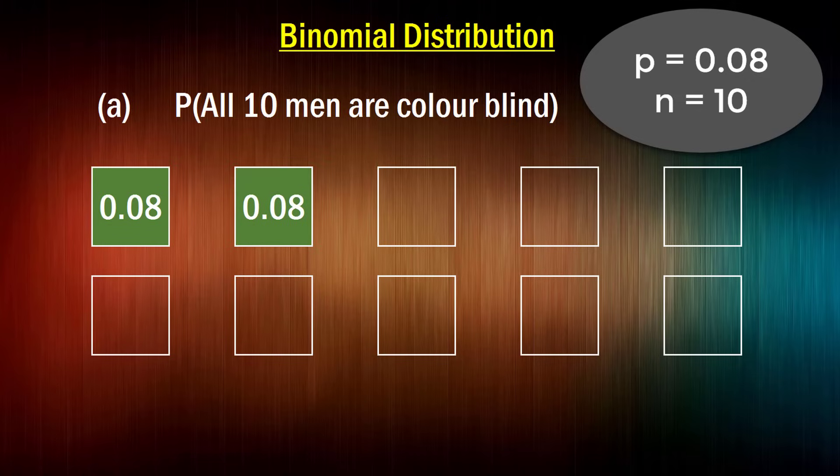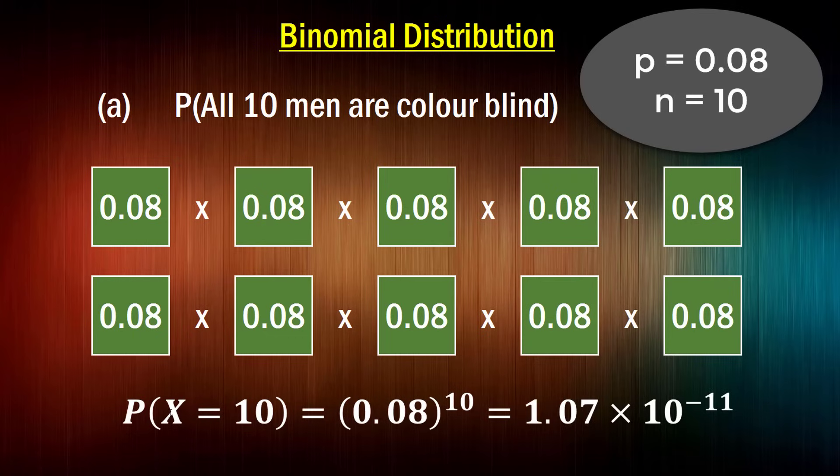Of course, the second man also has to be colorblind, the third, the fourth, and in fact, all of them have to be colorblind. So you're just going to multiply all those together to get a very, very small number. So I've written down here the probability of x equaling 10 is simply equal to 0.08 to the power of 10. You certainly don't need any help from something called a binomial distribution to answer that question. And that's a very, very small number, 1.07 times 10 to the minus 11. Very unlikely. So that's your answer to A already.